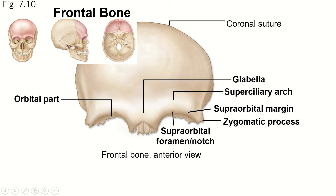So this is the frontal bone — it's cleverly on the front, has the orbital part that we've already talked about, ends at the back at the coronal suture here. And above the orbital part it has this supraorbital margin, which is just this edge where the frontal bone curves under to become the orbital part.